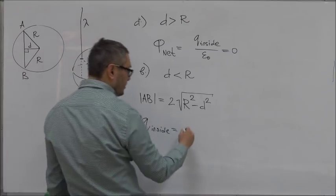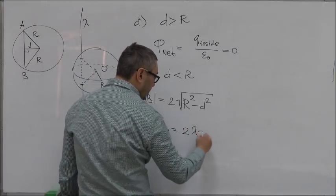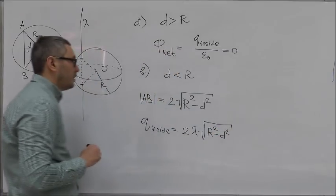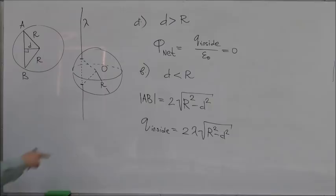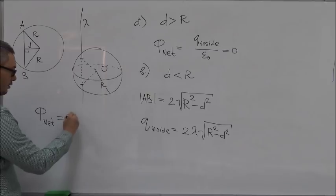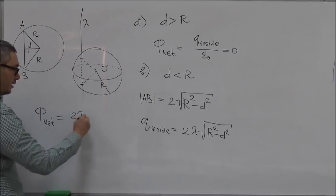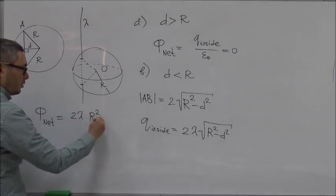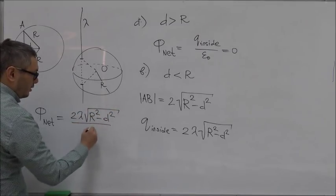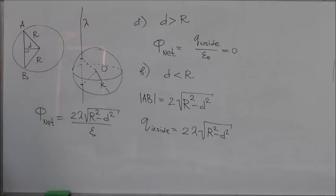So 2 lambda R square minus D square. And so we can now say that the net flux in this case is equal to 2 lambda R square minus D square over epsilon 0.